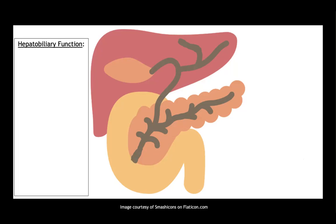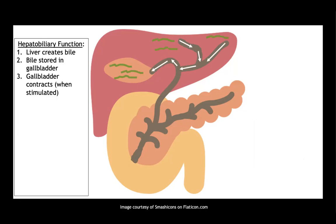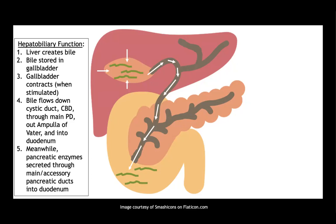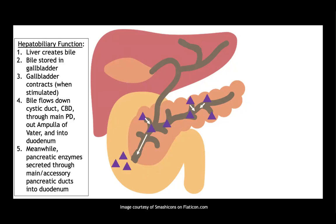Regarding hepatobiliary function: the liver creates bile, which is sent to the gallbladder. When the gallbladder is stimulated it contracts, and bile flows down the cystic duct into the common bile duct, through the main pancreatic duct, into the ampulla of Vater, and out the major duodenal papilla and sphincter of Oddi into the duodenum. Simultaneously, pancreatic enzymes are secreted into both the main and accessory pancreatic ducts and flow out the same tract into the duodenum.